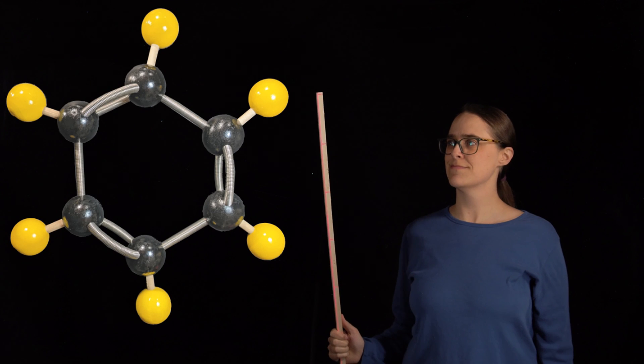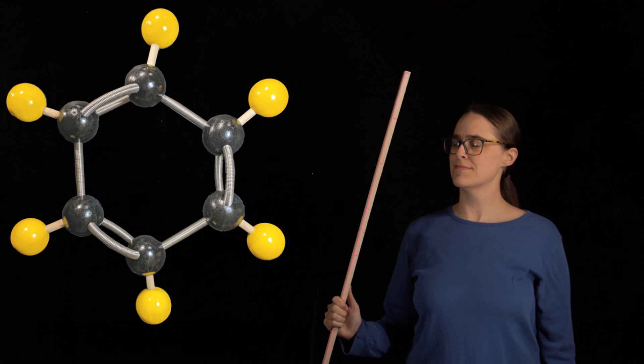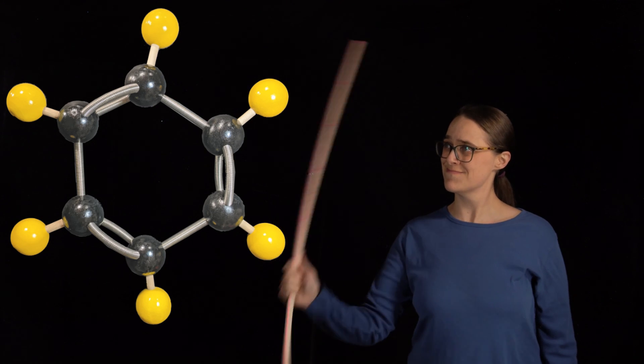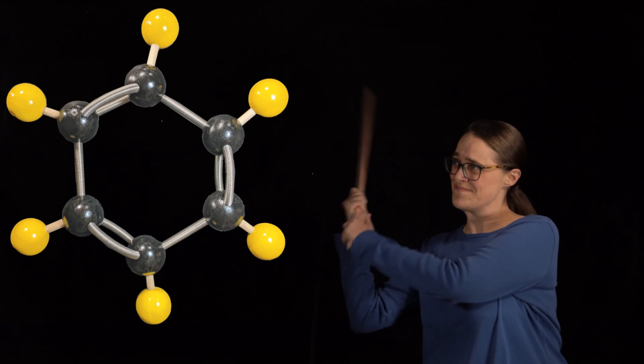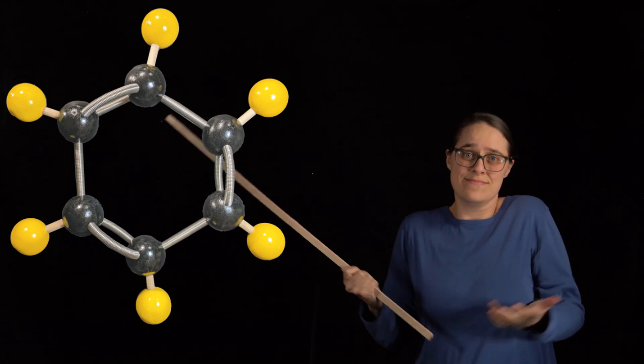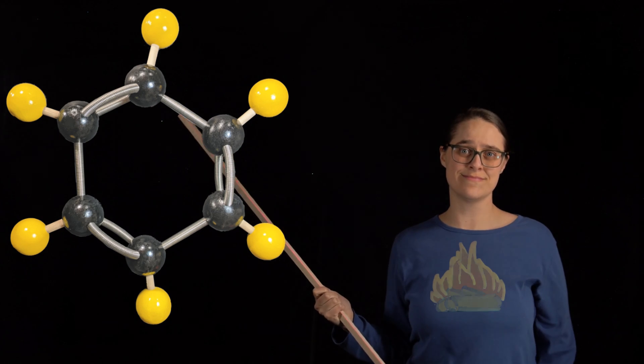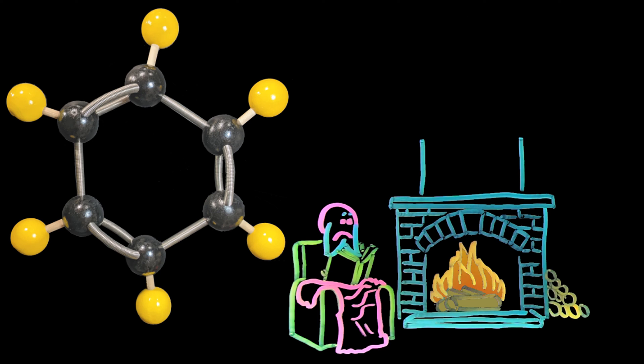I told you that benzene is unusually stable, meaning that it doesn't react very easily. The reason it's so stable has to do with these overlapping p orbitals. This is also the reason it took us so long to figure out the structure of benzene. When we started our journey pre-1865, we were not aware that electrons could be shared by more than two atoms.